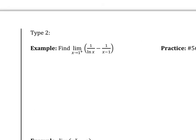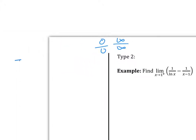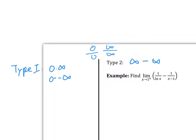Last week we finished Type 2. To apply L'Hôpital's rule, you first have to make sure that you get a zero over zero or infinity over infinity — that's the only way you can use L'Hôpital's rule. Type 1 was zero times infinity or zero times negative infinity. Type 2 was infinity minus infinity, and we cannot say that it is zero because you don't know which infinity is bigger. So we finished Type 2.